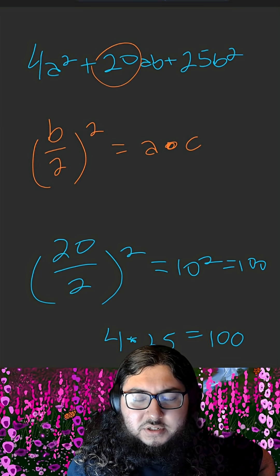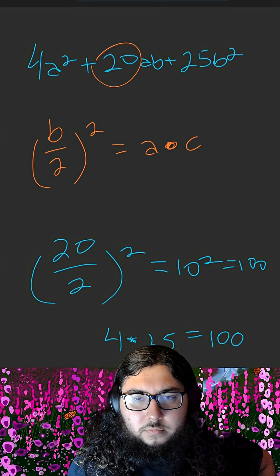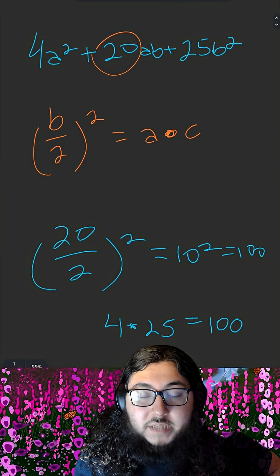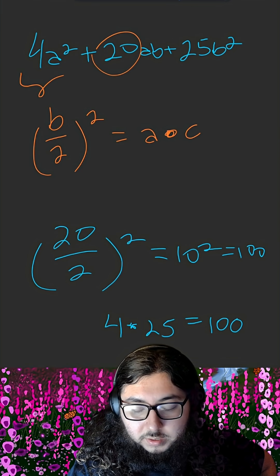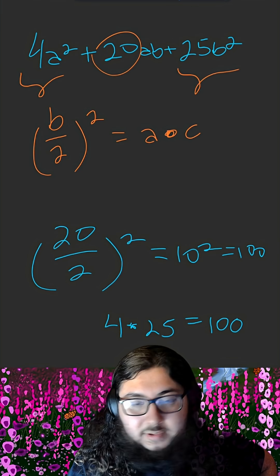Now the question is, how do we actually set it up such that it's in the form of a square binomial? And the answer is simple. We simply have to take the square root of the first term and the square root of the last term.